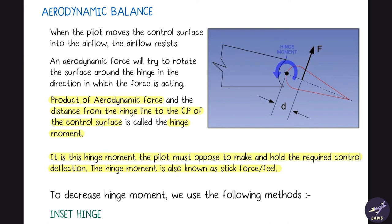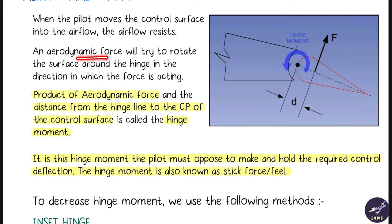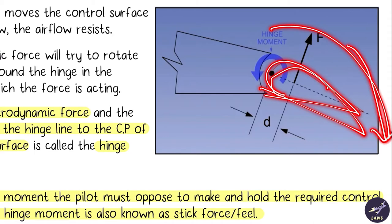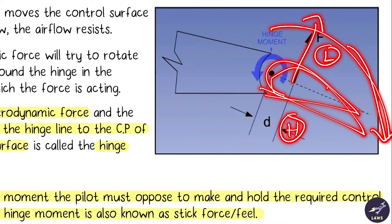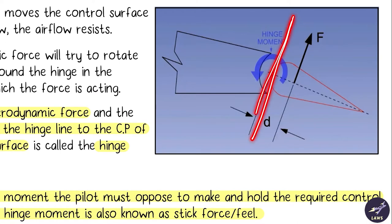The aerodynamic force will try to rotate the surface around the hinge in the direction the force is acting. If the control surface is deflected down, the airflow will accelerate over it, creating low pressure above and high pressure below. There will be a force acting, and the distance between the center of pressure and the hinge line creates a hinge moment.